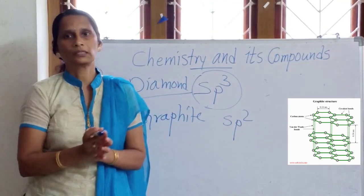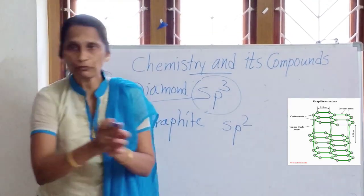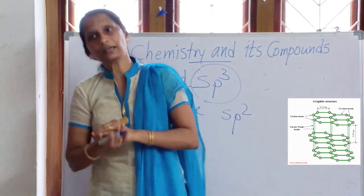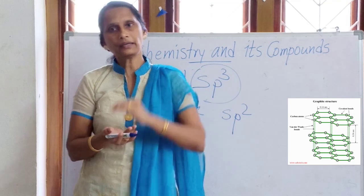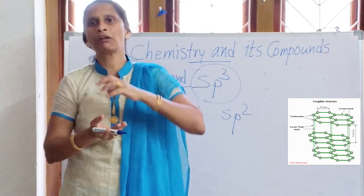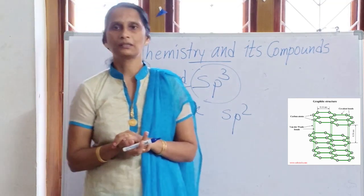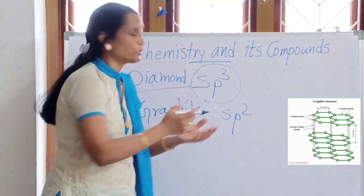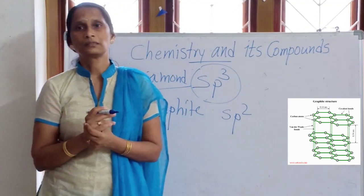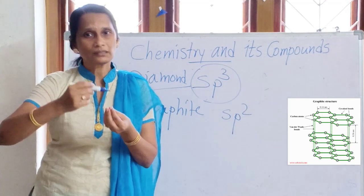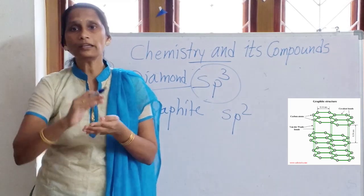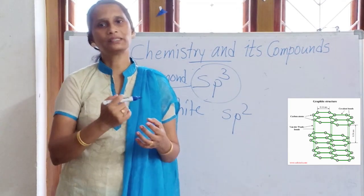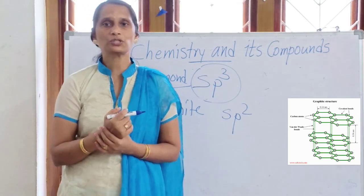Because of this electron delocalization, the strength reduces. Layer to layer, every layer is attracted by a weak van der Waals force, also known as London Dispersion Force, which is very, very weak. So the reason for graphite's softness is sp2 hybridization. This same property makes graphite useful as a lubricant and also as an electrical conductor.